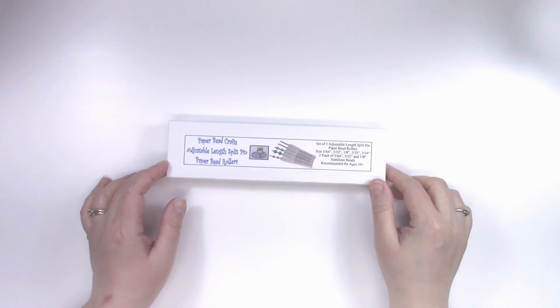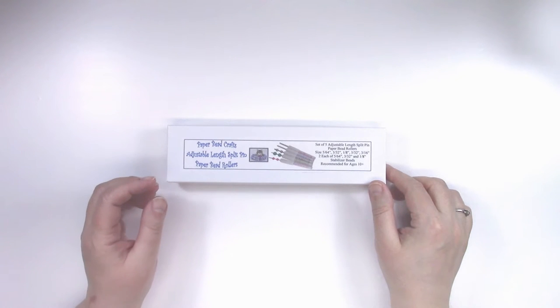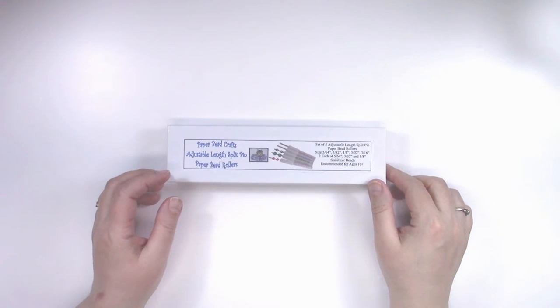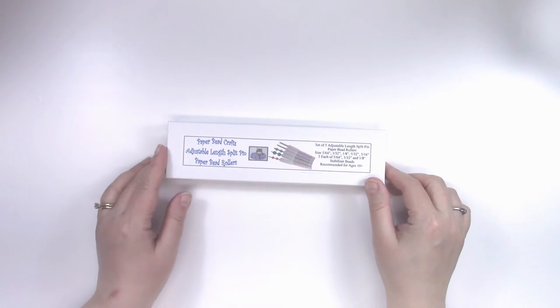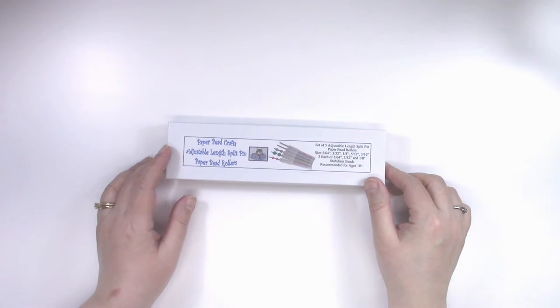They are available on Amazon.com as well as PaperBeadCrafts.com and our store at Etsy.com. Just go to PaperBeadCrafts.com and look for the adjustable length paper bead rollers. You'll find them right on the front page and just follow the links from there.